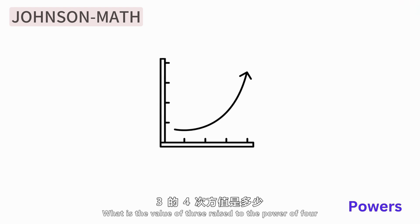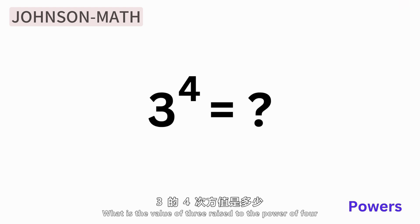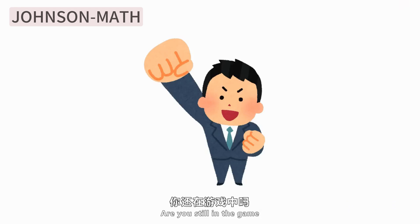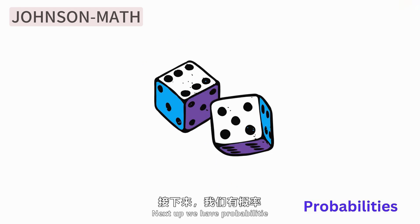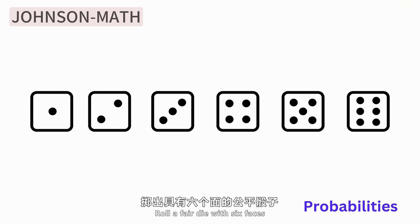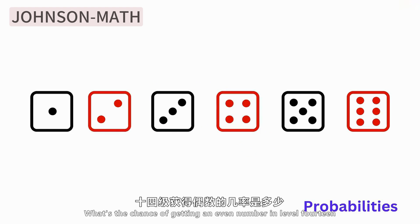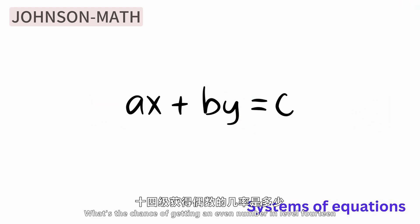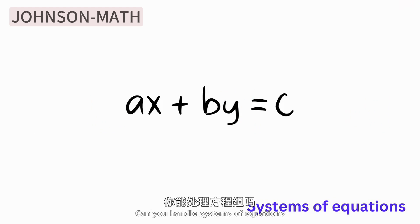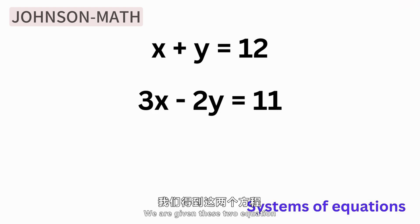Are you still holding on? Next is the probability problem. What is the probability of getting an even number with a six-sided dice? Level 14, can you solve the system of equations? Given two equations, is it difficult to find the values of x and y? But this is just the beginning.